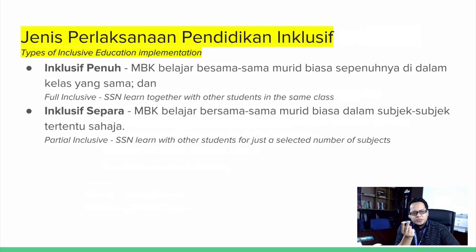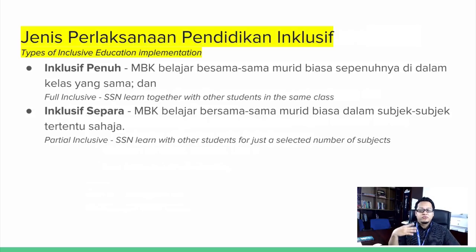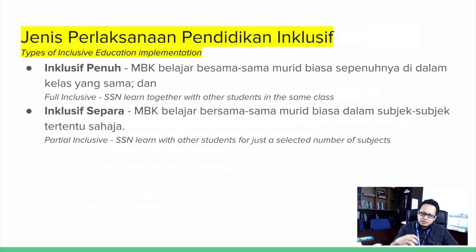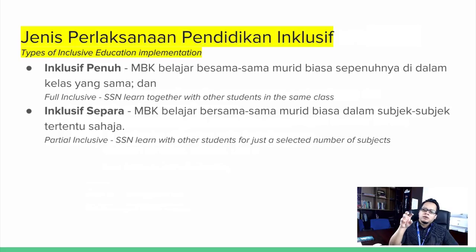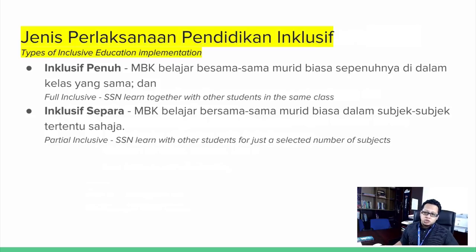There are two types of inclusive education implemented in Malaysia: full inclusive and partial inclusive. Full inclusive means that students with special needs learn together with other students in the same class. Partial inclusive means that students with special needs learn with other students for just a selected number of subjects, and for other subjects they will be taught in a special classroom.